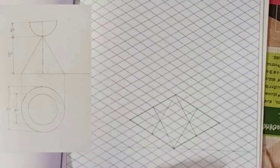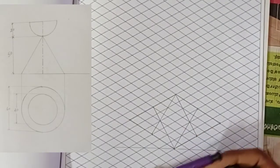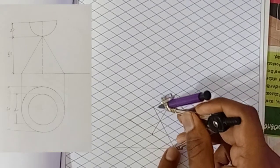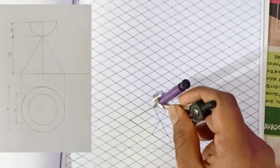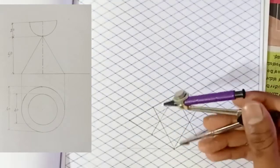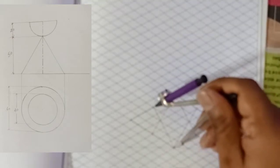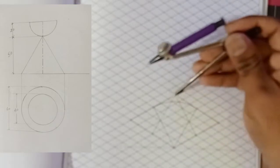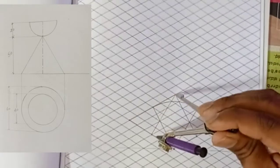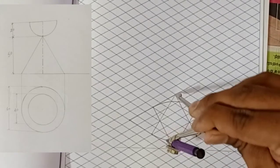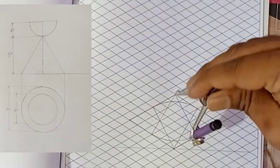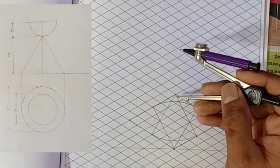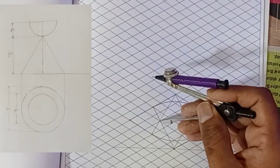To construct the isocircle, from where to where you have drawn the line, take the compass the same distance — from one point to the end point — and draw the arc carefully with the compass. Draw the arc on both opposite sides.